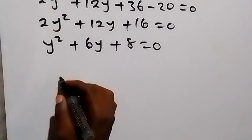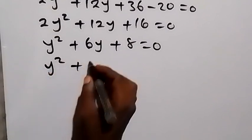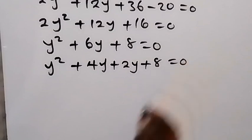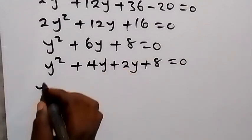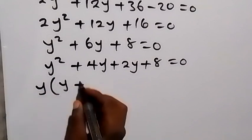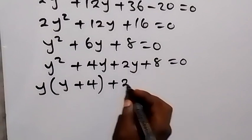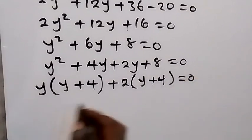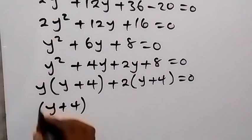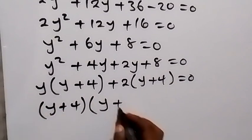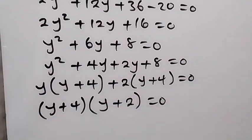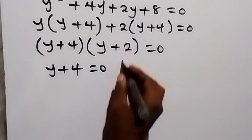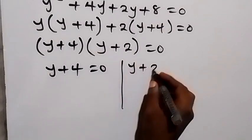Factorizing: y squared plus 4y plus 2y plus 8 equals 0. Grouping gives y(y plus 4) plus 2(y plus 4) equals 0, so (y plus 4)(y plus 2) equals 0. Therefore y plus 4 equals 0 or y plus 2 equals 0.